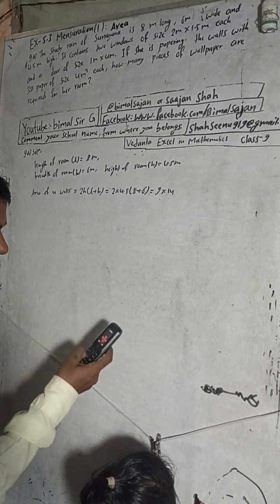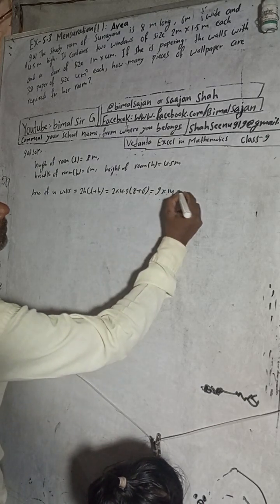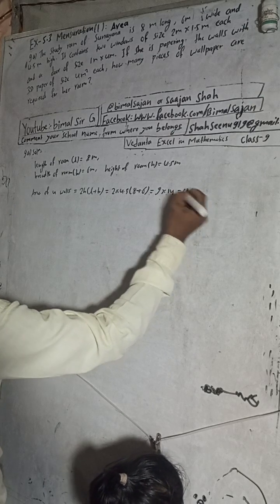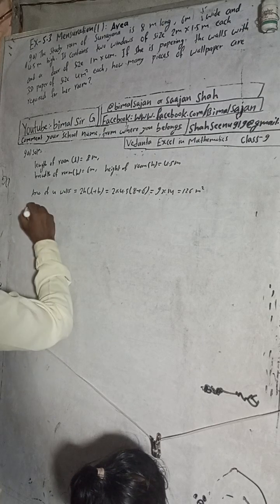That equals 14 into 9, which is 126 meter square. This is the area of four walls.